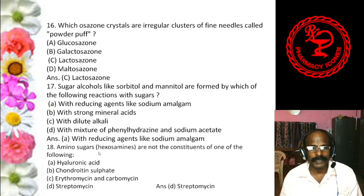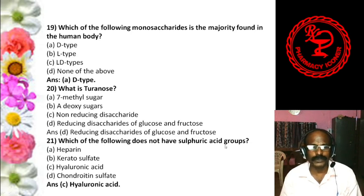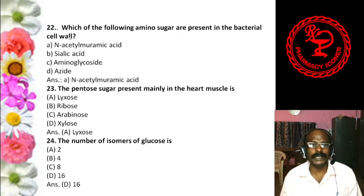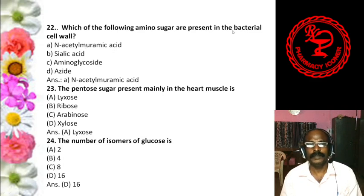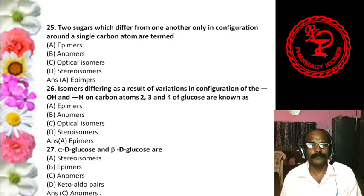Question 2: The general formula of polysaccharide is — options include (C6H10O5)n, (C6H12O5)n, (C6H10O6)n. The answer is (C6H10O5)n, because when glucose units form a bond, two hydrogens and one oxygen are removed as water. So the answer is A.